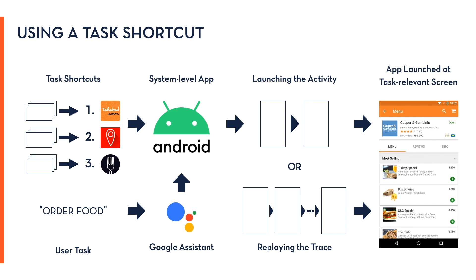Savant does not generalize or automate. In this way, Savant complements existing task automation systems by automatically choosing the right app and launching it at a task-relevant screen.